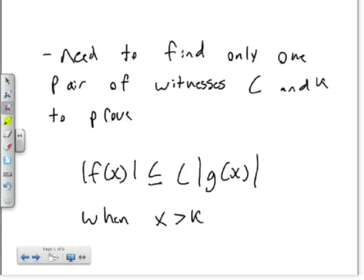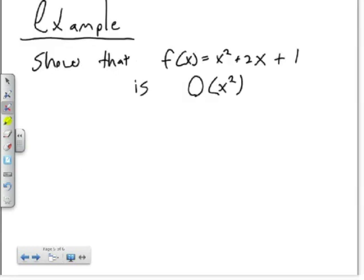To prove that f(x) is Big O of g(x), you need to only find one pair of witnesses C and K to prove that |f(x)| ≤ C|g(x)| whenever x is bigger than the witness K.